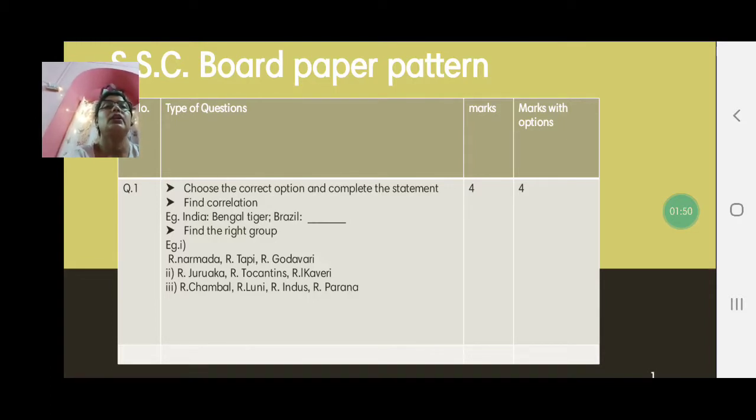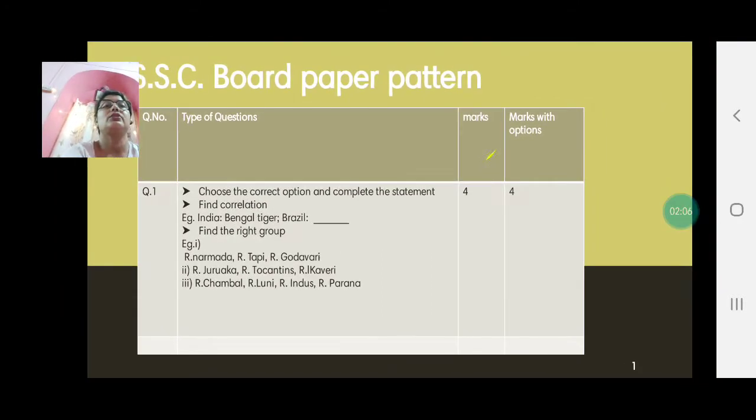Then find the right group. Now which of these is wrong, you have to see and the right one you have to pick up or find the wrong group. Now read the question properly because a lot of marks are kept for application. So here you have river Narmada, Tappi, Kodavari. They are all rivers in India, so find river Juruwaka, river Tukantins and river Kaveri. Now Kaveri is from India, so that's a wrong group altogether.